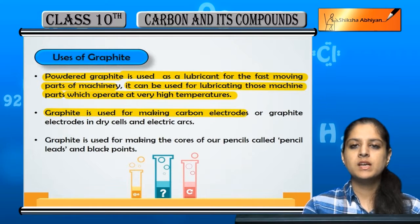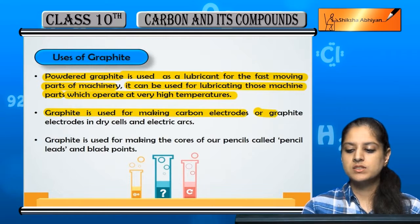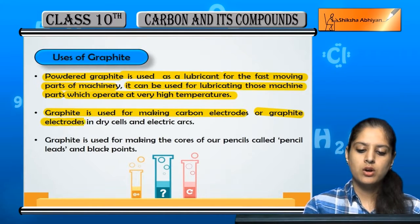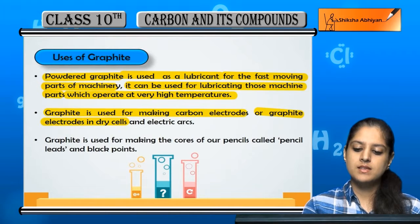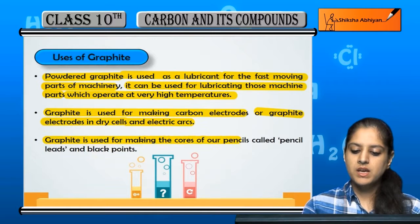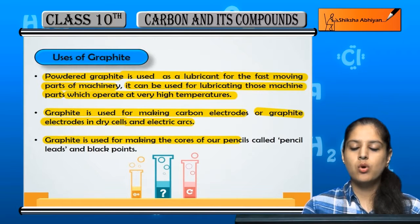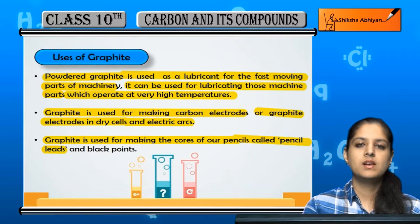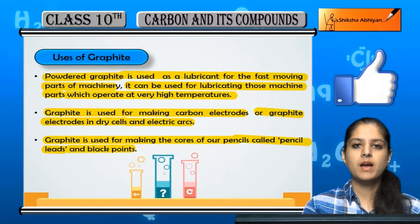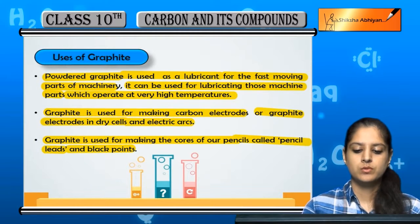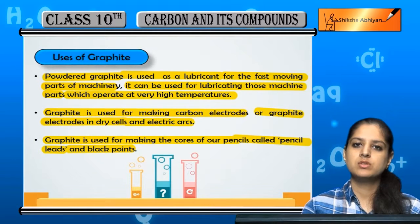Graphite is also used for carbon electrodes because it shows electrical conductivity. Graphite electrodes are used in dry cells and electric arcs. Graphite is used for making the cores of pencils — the pencil leads or black points that we use in pencils are made of graphite.